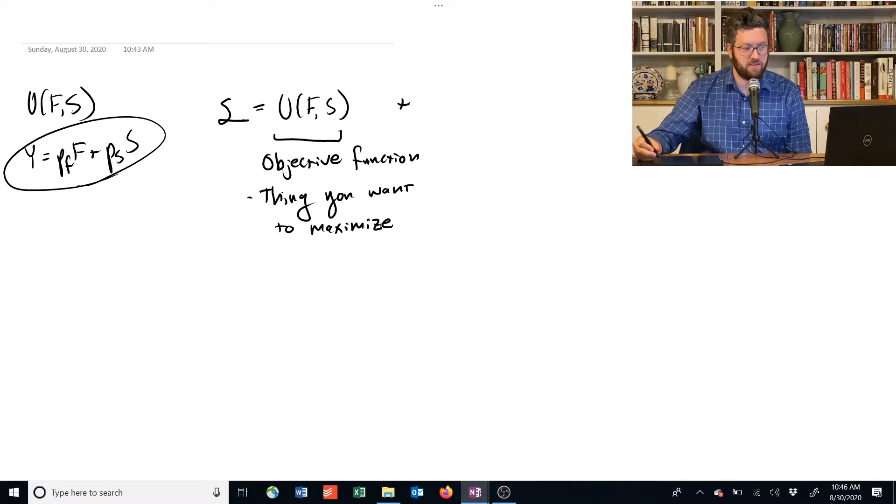Well, with the Lagrangian, we've got this way of doing that. And the way we do it is we add to this utility function the constraint, but we multiply the constraint by a new variable called the Lagrange multiplier.